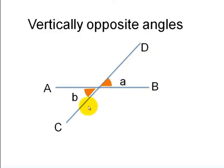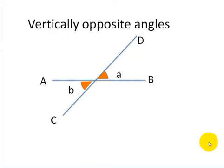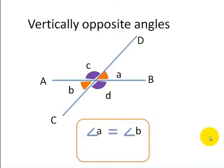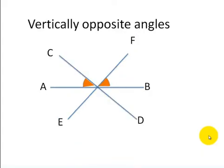When two V shapes are formed by two straight lines, angle A and angle B are vertically opposite angles. Similarly, angle C and angle D are also vertically opposite angles. The key relationship is that vertically opposite angles are equal: angle A is equal to angle B, and angle C is equal to angle D.